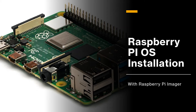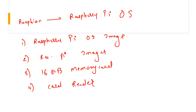Let's see how to install Raspberry Pi OS onto a Raspberry Pi computer. For this particular exercise you are going to need the Raspberry Pi OS image, which we will be downloading from the internet. You will also require the Raspberry Pi Imager software, again available to download from the internet, a 16GB memory card at least, and a USB card reader to proceed with the installation.